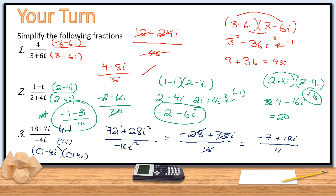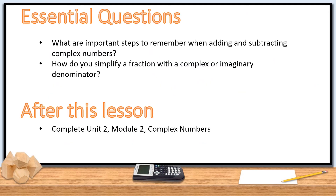To summarize: when adding and subtracting complex numbers, keep the real parts together and the imaginary parts together, and if there is subtraction, make sure you distribute the negative to all terms. To simplify a fraction with a complex denominator, multiply by the other factor that creates a difference of two squares — if the denominator has real plus imaginary, multiply by real minus imaginary, and vice versa. You must do the same thing on top and bottom, then simplify.